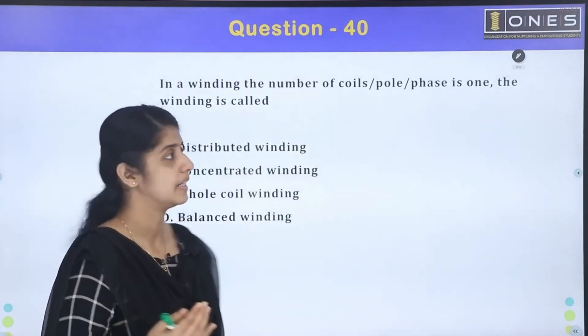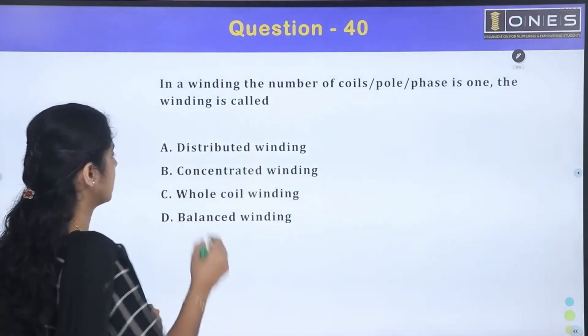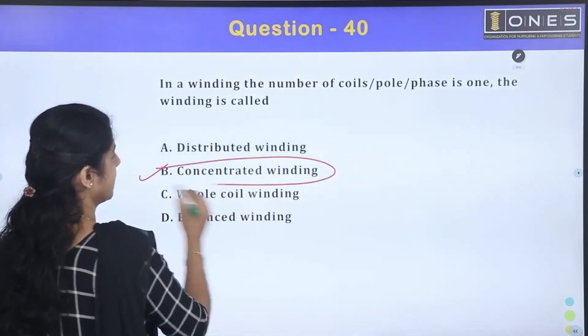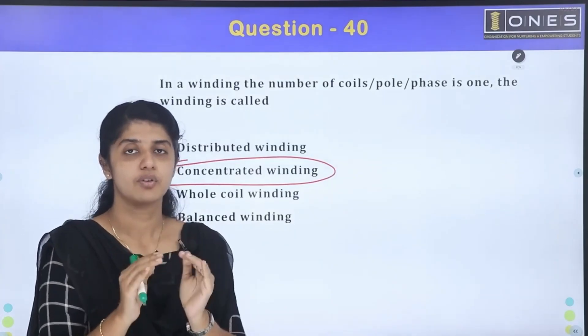What type of winding are you? The options are distributed winding, concentrated winding, whole winding, balanced winding. What is the answer? Concentrated winding. It means concentrated winding - a phase with full coils.